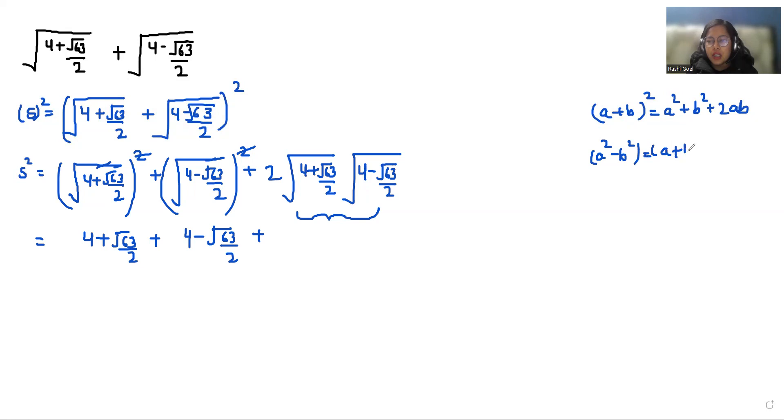(a + b)(a - b). So we can write it as 2 times √(4 + √63/2) times √(4 - √63/2) whole square.